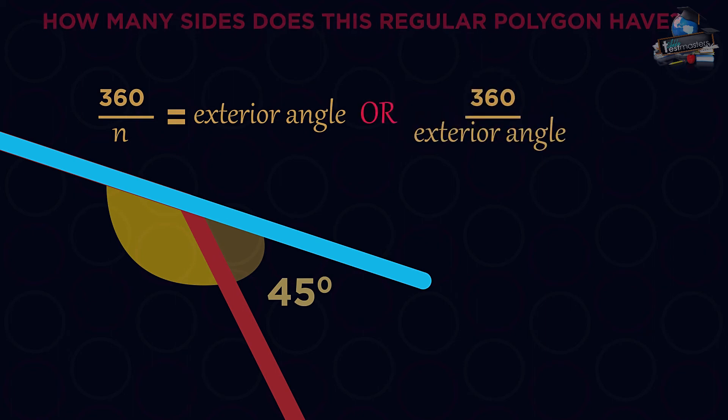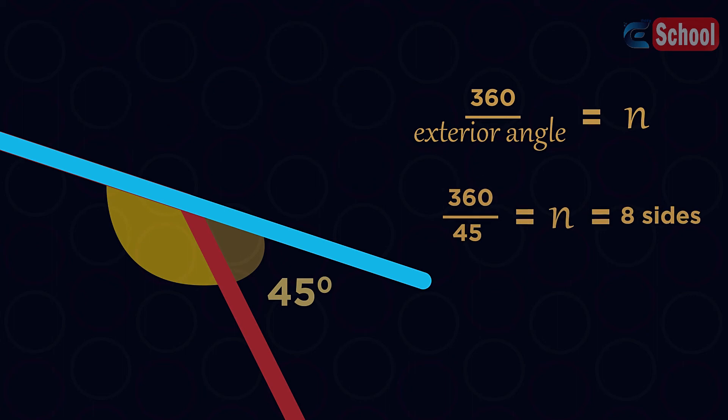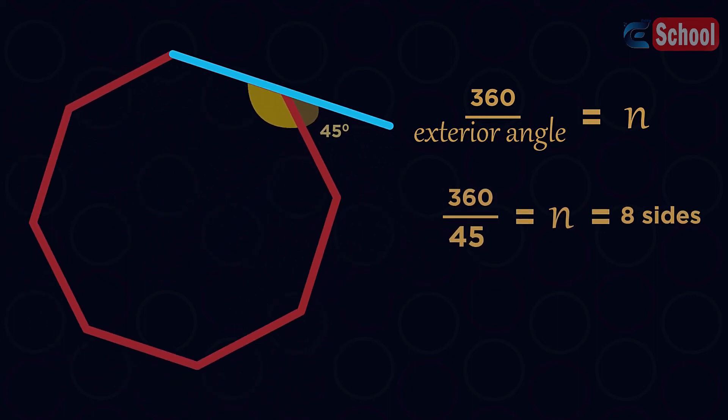Or, simple rearranging. 360 divided by the exterior angle will give the number of sides. So 360 divided by 45 means this is an octagon.